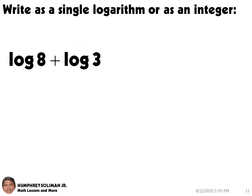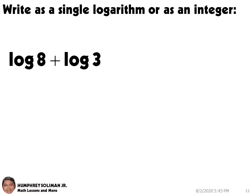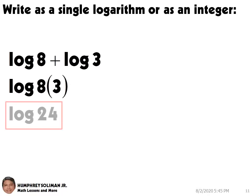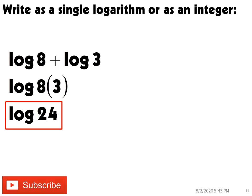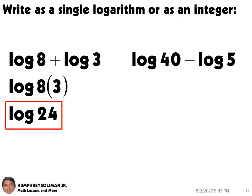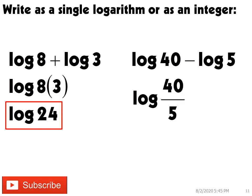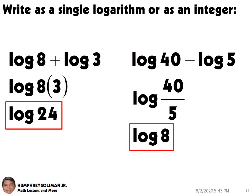Write as a single logarithm or as an integer. Let's try log 8 plus log 3. Since we are adding logarithms, we need to multiply 8 times 3. So, in a single logarithm, this is log 24. Next, let's try log 40 minus log 5. Since we are subtracting logarithms, we need to divide 40 by 5. So, in a single logarithm, this is log 8.